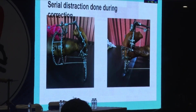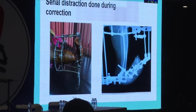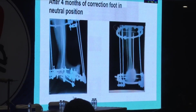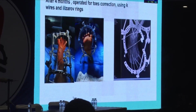This is how the frame looked. Serial distraction — serial pictures showed gradual improvement in the deformity, and we almost came to neutral. After four months, the correction was up to the neutral position. Once the correction was achieved, attention was turned to correcting the toe deformity, as the toes were also very much deformed on the dorsal aspect.